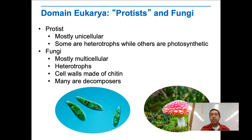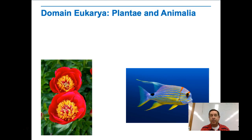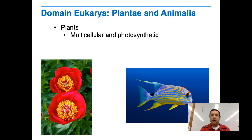Fungi are for the most part multicellular, with the exception of things like yeast. They are heterotrophs — they eat things — and many of them are decomposers. They have cell walls made up of a protein called chitin, which is different from the cell walls of bacteria and plants. Plants, on the other hand, are multicellular and photosynthetic. Sometimes algae are classified with plants, but in most cases algae go with the protists.